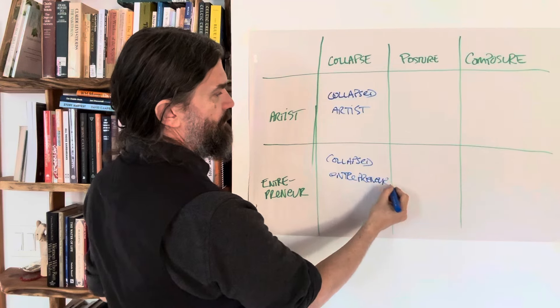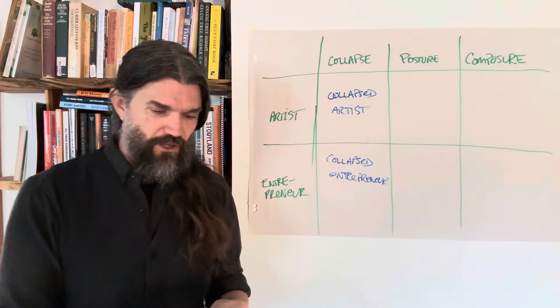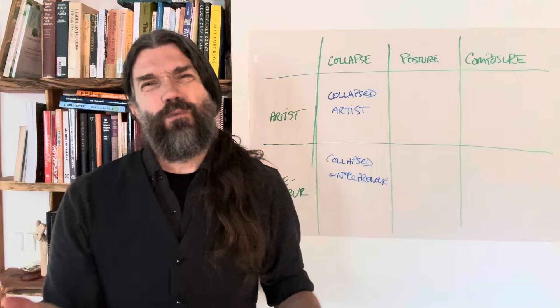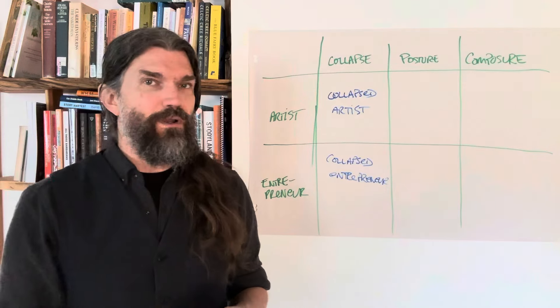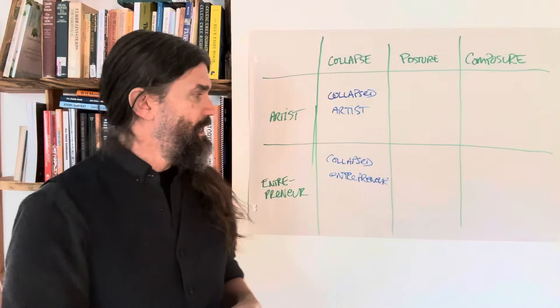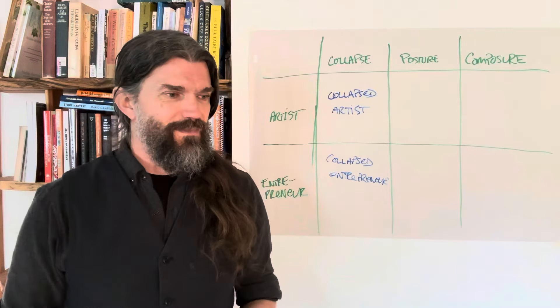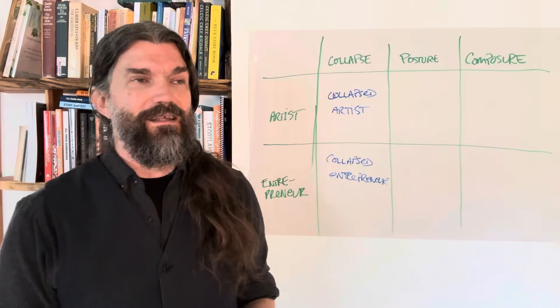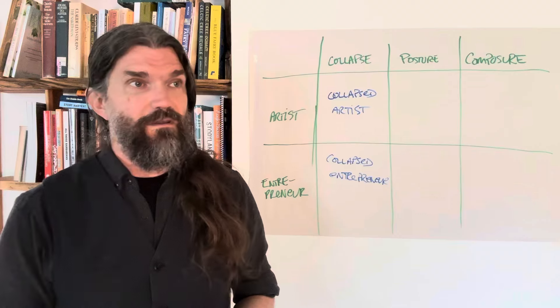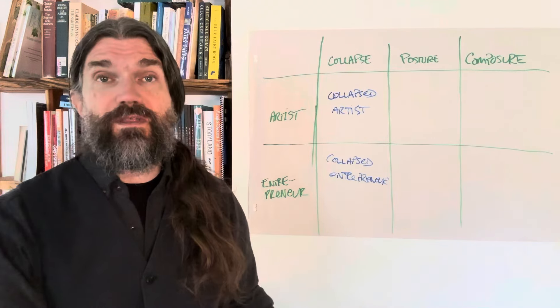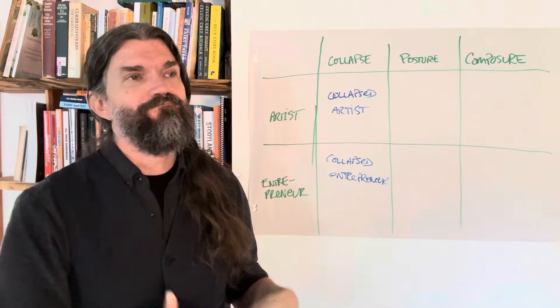And so hopefully you get a sense of how these would combine. If somebody's a collapsed artist: I make all this beautiful stuff, but who would want it? I don't want to burden anybody with it. And the collapsed entrepreneur is, oh, I've got this idea, but somebody else has probably thought of it. And again, I don't want to be a burden. Maybe I should just help people with it. I'll just do it for free. That kind of thing.